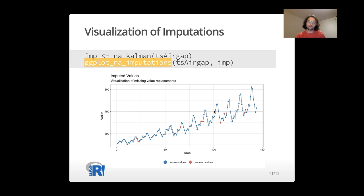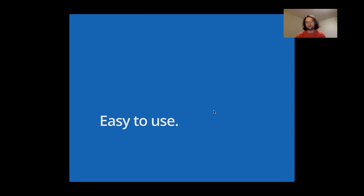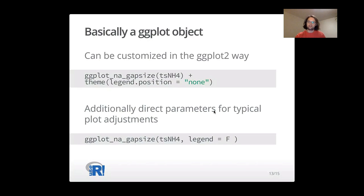This was a short overview over three important plots. And there are more plots in the package, which we can't show today. But what I'll show you is, the package itself is easy to use. The output is basically a ggplot object, which can be, of course, customized in the ggplot2 way. As you can see, you have the ggplot and then you make plus theme legend.position equals none. And the default legend would disappear. And you can do all kinds of ggplot2 magic and adapt the plot to your needs there.